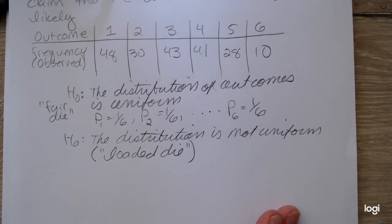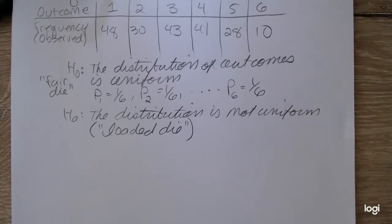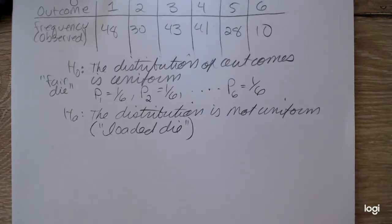So I'm going to get the test statistic and p-value using the goodness-of-fit function built into the TI-84. But if you wanted to do this by hand, you're going to need the expected counts.